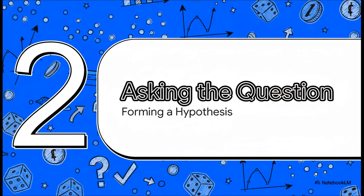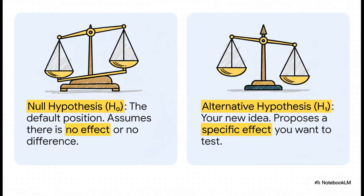So we've looked at our data, gotten to know it a bit. Now it's time for the next big step: asking a real specific question we can actually test. We're shifting gears from just looking at things to actively questioning the numbers. You can think of every statistical test as a showdown between two competing stories. First, you've got the null hypothesis — the boring default story, the idea that nothing special is happening, no real difference or effect. Then you have the alternative hypothesis — your idea, the new exciting story you're trying to tell, that there is a specific effect, a real difference. The whole point of the test is to see if you've got enough evidence to throw out that default story and say: my new idea is probably right.